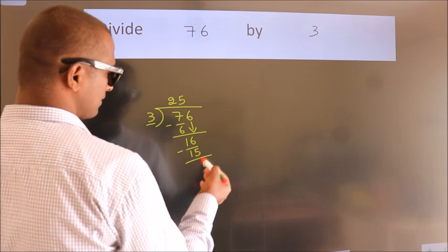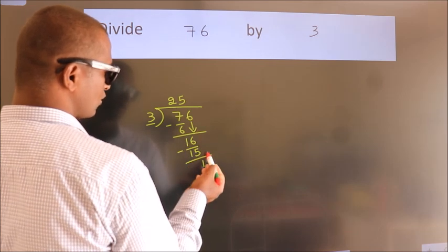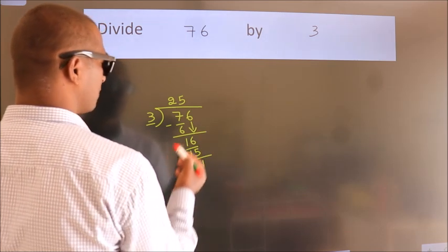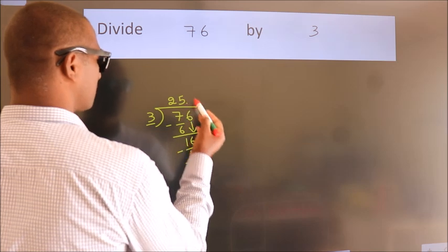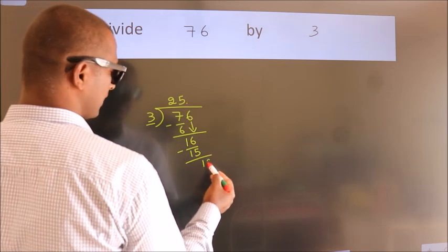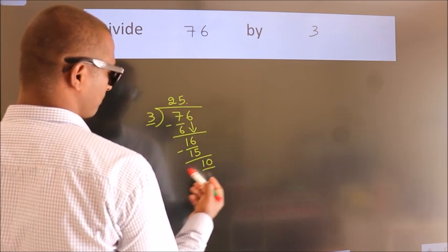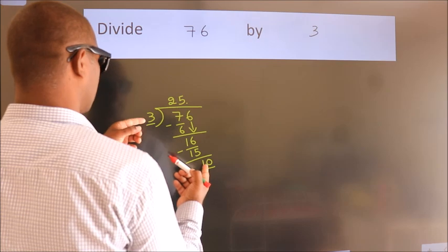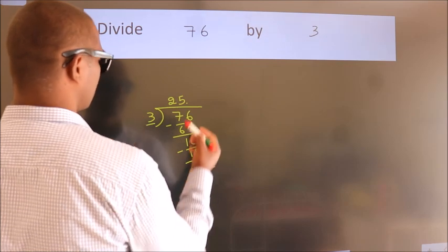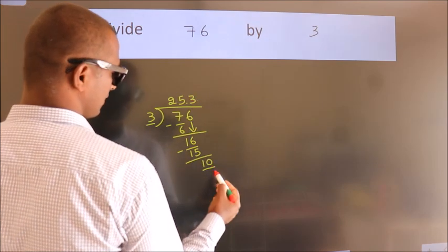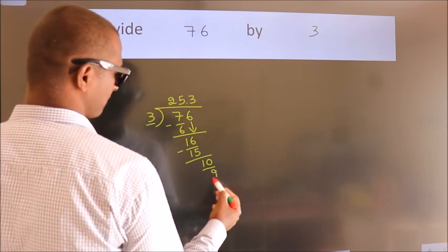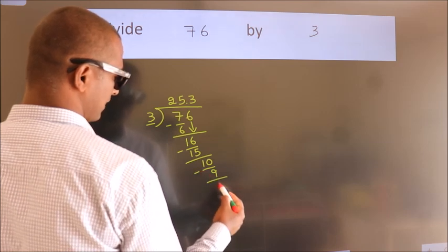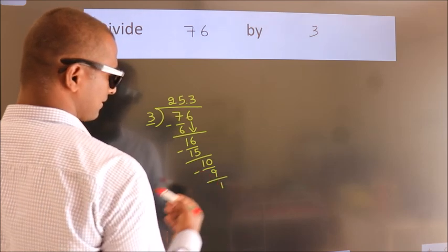After this, there are no more numbers to bring down. So what we do is we put a dot and take 0, making 10. A number close to 10 in the 3 times table is 3 threes are 9. Now we subtract. We get 1.